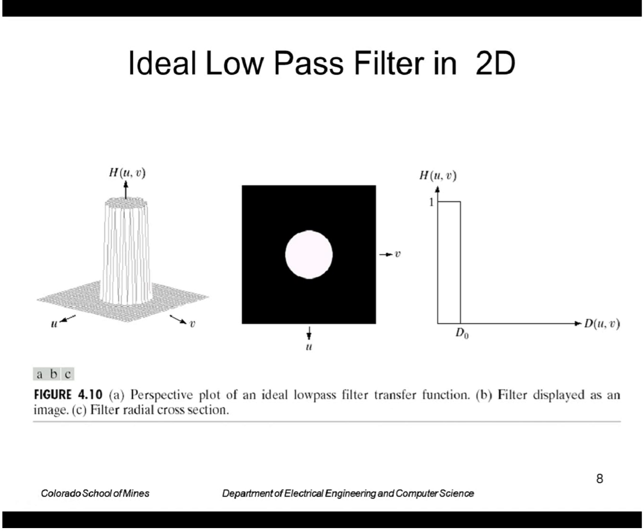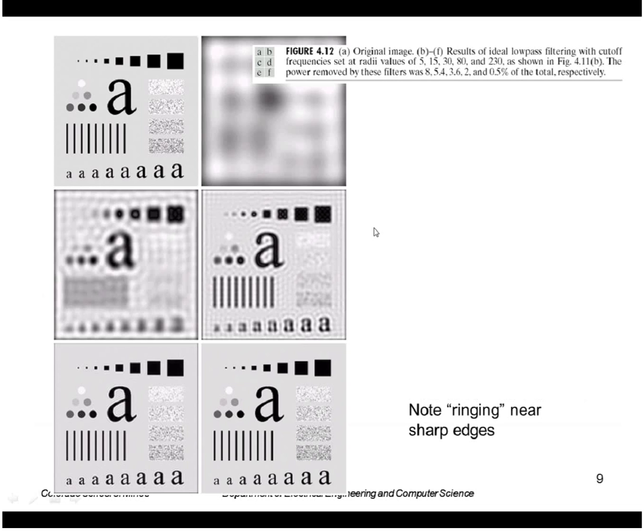In two dimensions an ideal low-pass filter would look like this, so it would be a circle of magnitude one and then outside a certain radius it would go to zero. These are some examples of applying an ideal low-pass filter to a real image. Note the ringing here in the vicinity of sharp edges like step edges.